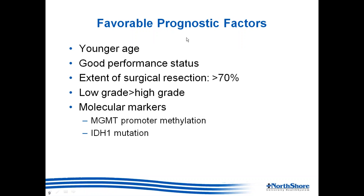Good prognostic factors in glioblastoma include younger age, good neurological performance status, and greater extent of surgical resection — most agree that removing 70–80% or more at first surgery is favorable. Lower-grade tumors also do better. What has really changed prognostication are molecular markers: the two most important for glioblastoma are MGMT promoter methylation and the IDH1 mutation.